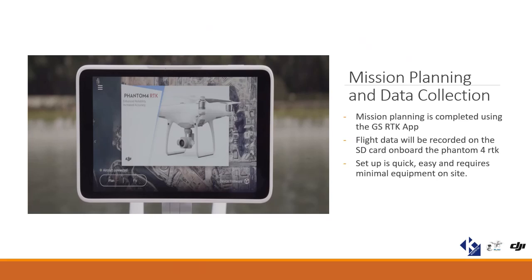The majority of our users will be using the GSRTK app to plan their missions in 2D mode. If you have the SDK version of the Phantom 4 RTK, you'll be able to use other third-party apps. But with the GSRTK app, you can import KML files into the controller to specify the area you want to map, or just create your own polygon over the base map to define the site area. All the data is stored on the SD card on board with the Phantom 4 RTK. The DJI planning app has made it extremely simple, quick, and easy to get set up on site.